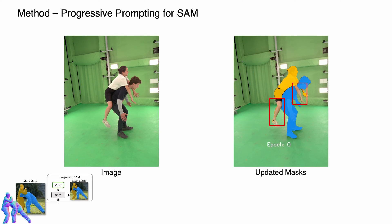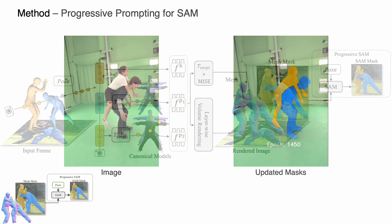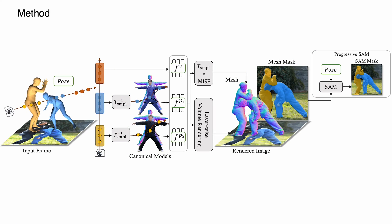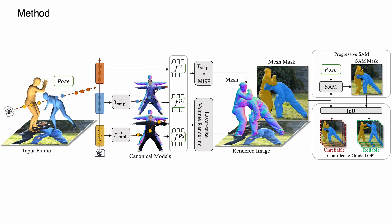The instance segmentation masks are progressively updated and eventually cover the complete human bodies on a fine scale. To avoid harmful shape updates due to inaccurate poses, we formulate a confidence-guided alternating optimization that treats IOU between the projected mesh masks and SAM output as a confidence measure to classify video frames.